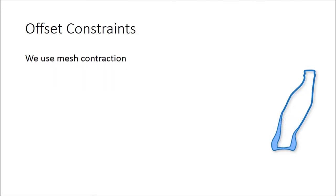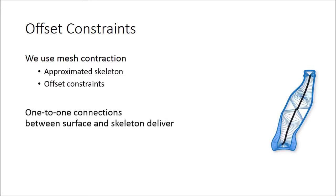Since we create offsets of the input, we need appropriate constraints to prevent self-intersections of the resulting surfaces. We use iterative mesh contraction to get the object's skeleton, which provides us with the maximum offset distance. The vector field that connects the surface with the skeleton provides us with the offset directions.